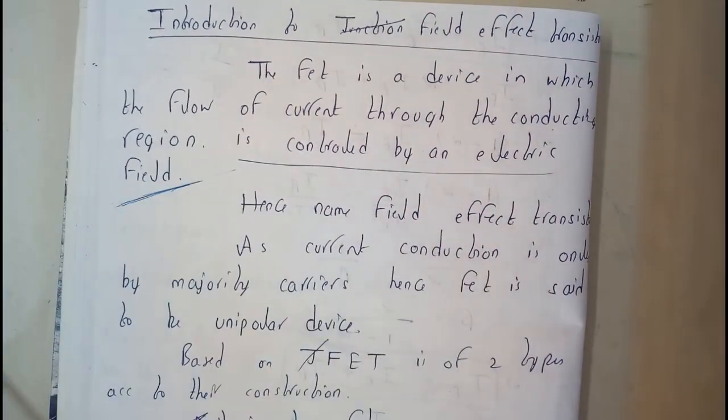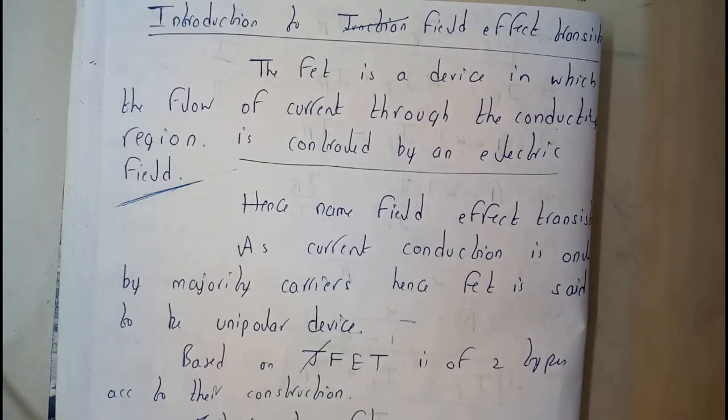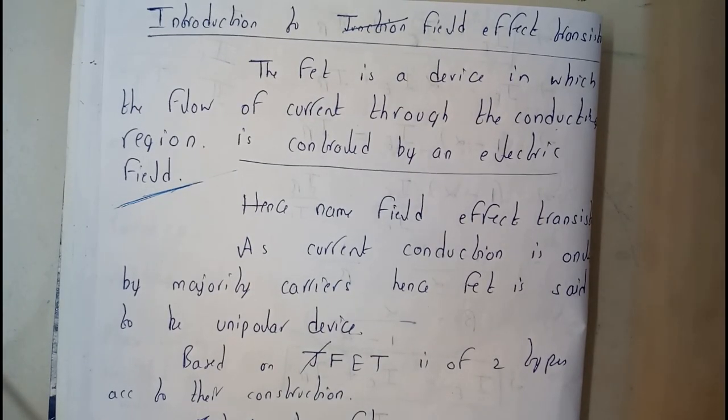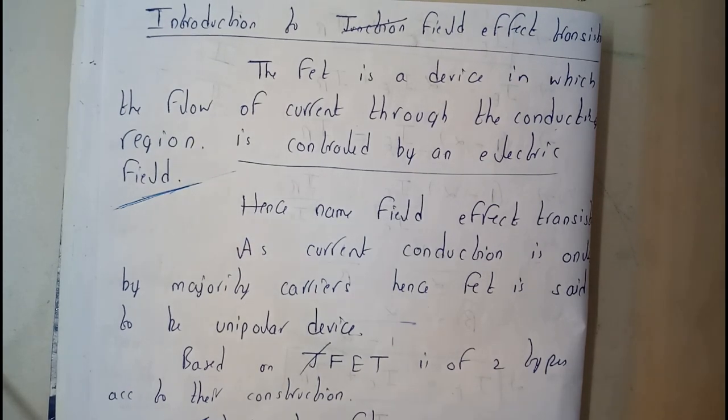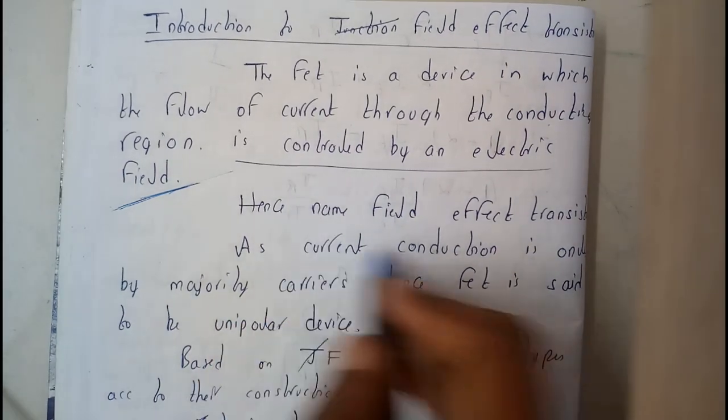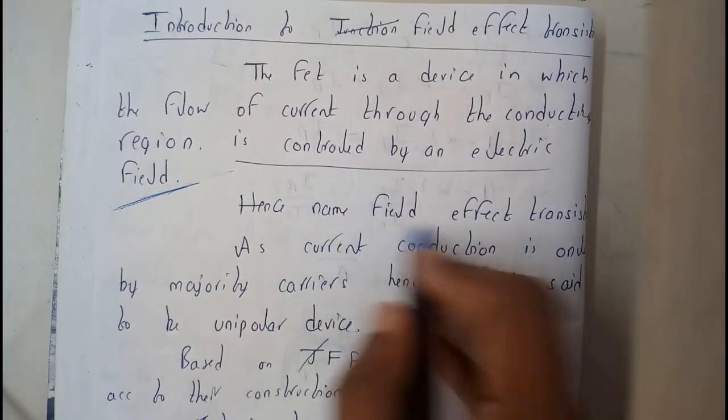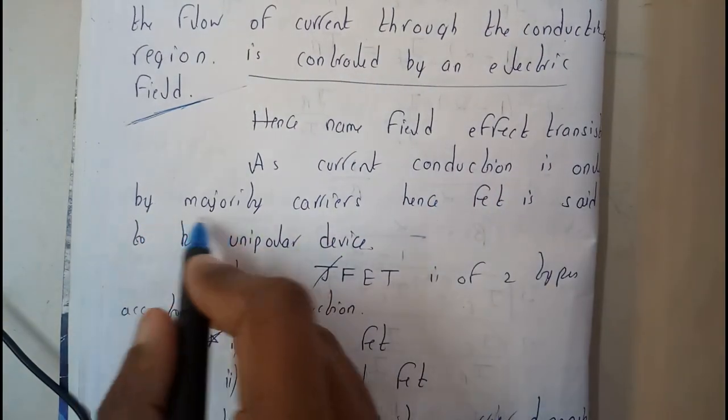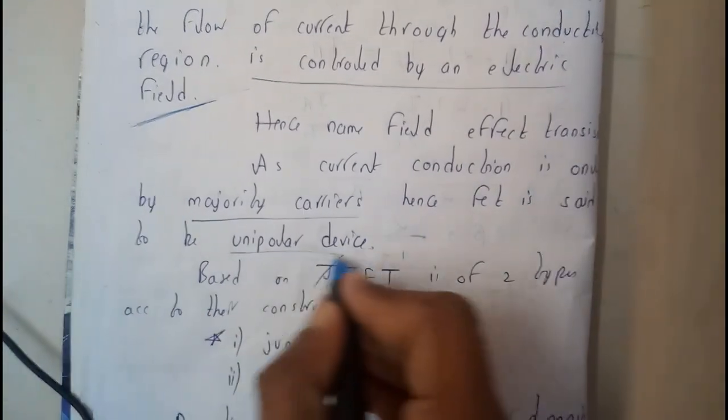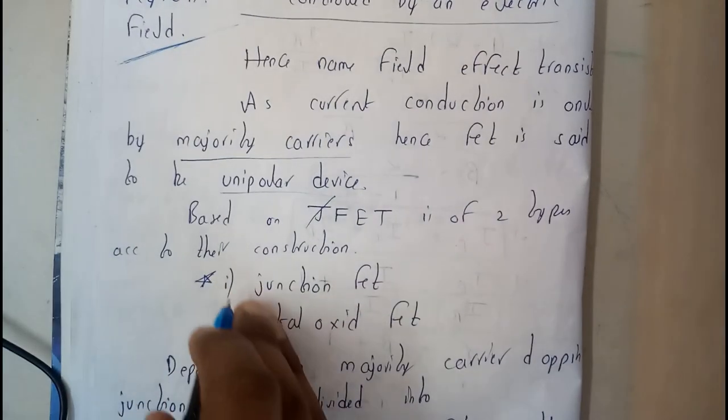That can be controlled - that's the reason why they call it as a FET, that is field effect transistor. Hence from the name, field effect transistor, as the current conduction is only by the majority carriers, the FET is said to be a unipolar device.